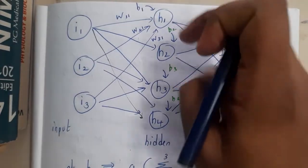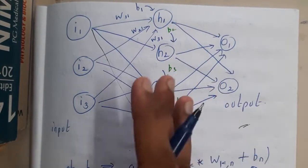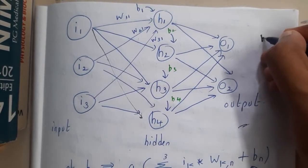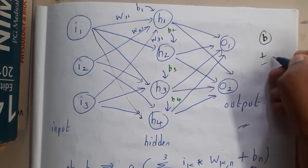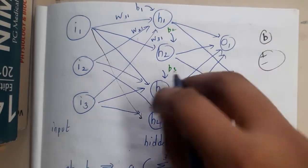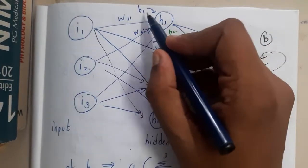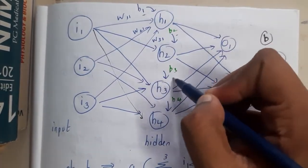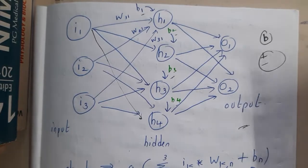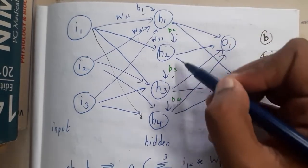One more thing you should remember is in perceptron we did not take any bias value, but in multi-layer neural network or multi-layer perceptron, we are guaranteed with a bias value. That bias value should also be included.